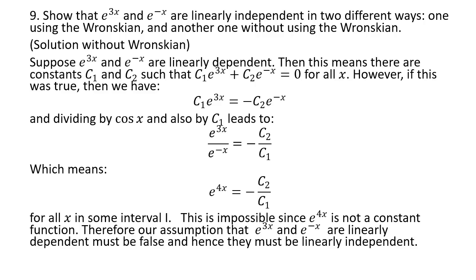Number nine: show that e to 3x and e to negative x are linearly independent. There should be two methods to show this - one without using the Wronskian, another using the Wronskian. Although using the Wronskian is easier, it doesn't capture the idea of what linear independence is.